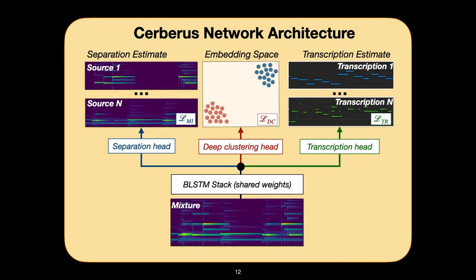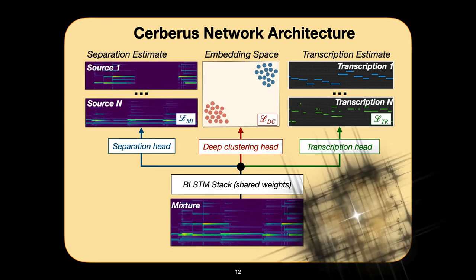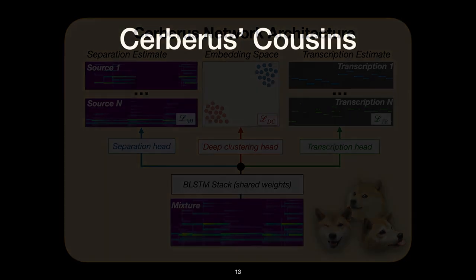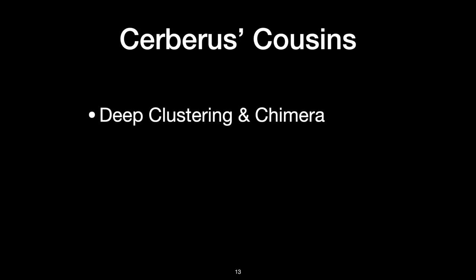Our proposed method is a three-headed deep neural network architecture designed to isolate and transcribe multiple polyphonic and percussive instruments in a musical mixture. Shown on the screen, we call this network Cerberus. Each head has a different output and objective function. The key idea is to first transform an input representation, such as a spectrogram, into a learned representation that is useful for both transcription and separation. The learned representations can then be processed by smaller layers specialized for transcription or separation. This work is closely related to two prior works in the source separation literature, namely deep clustering and chimera.